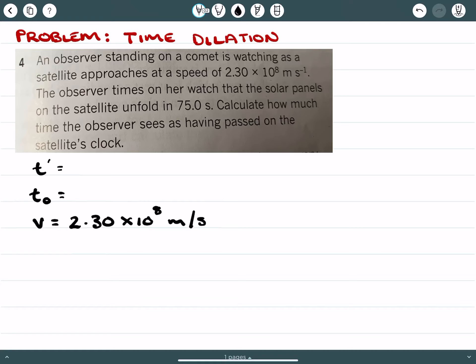Now because the observer is looking at the satellite which is the moving frame and is not within that moving frame, therefore the 75 seconds would not be proper time. And that would be the dilated time outside of the satellite which is moving towards the observer. So therefore, what we're trying to ascertain is what is actually proper time.